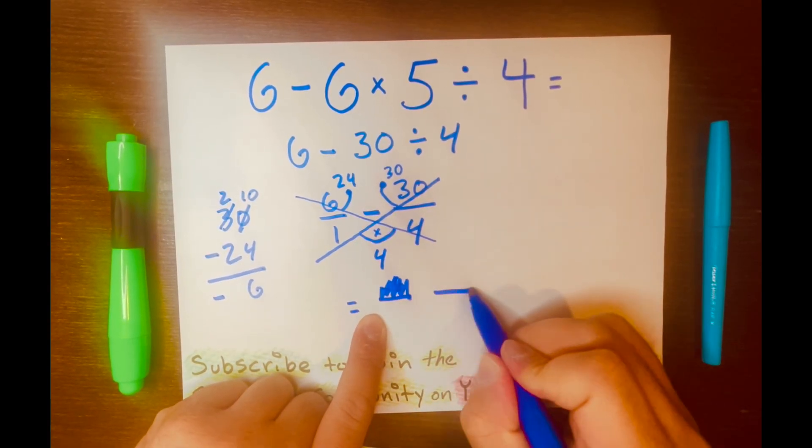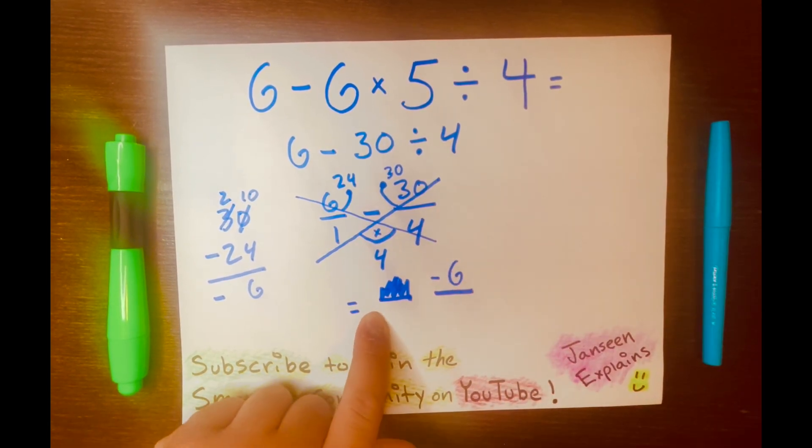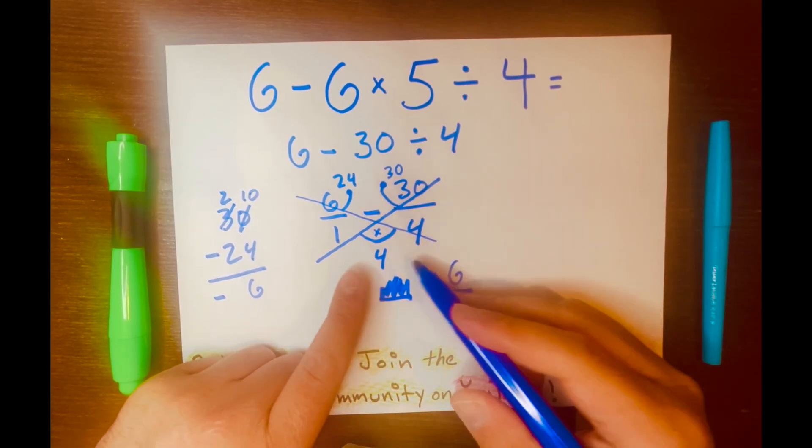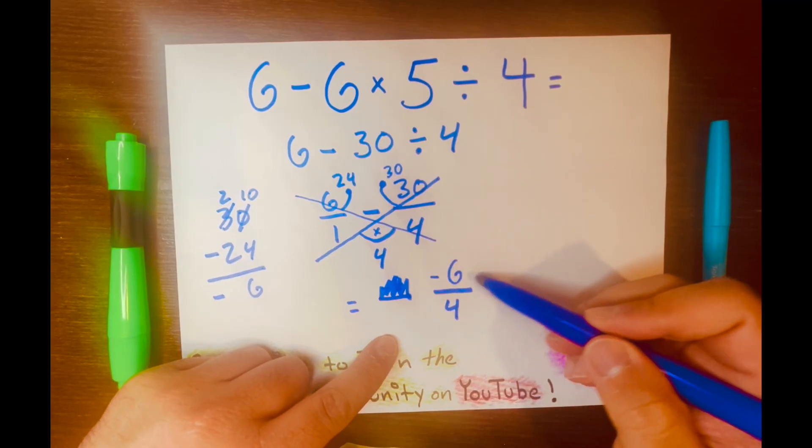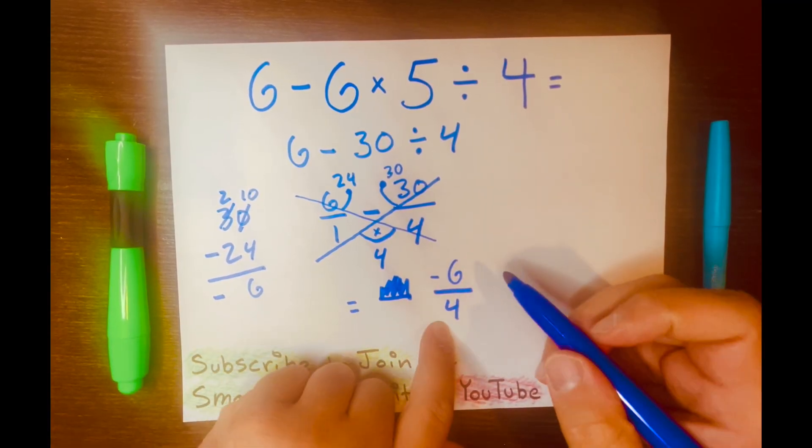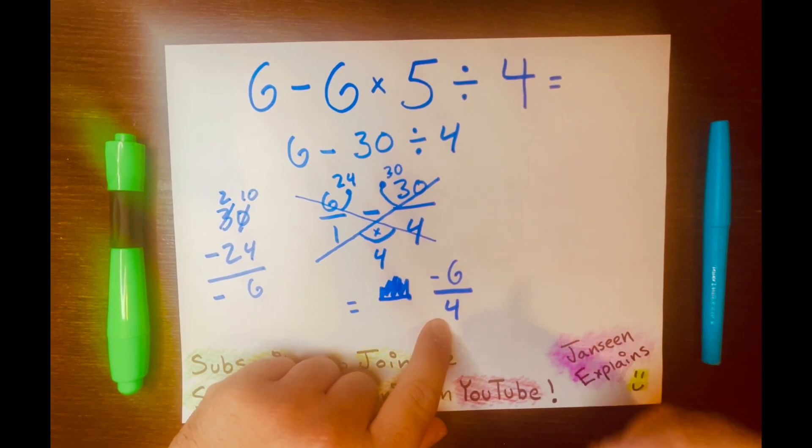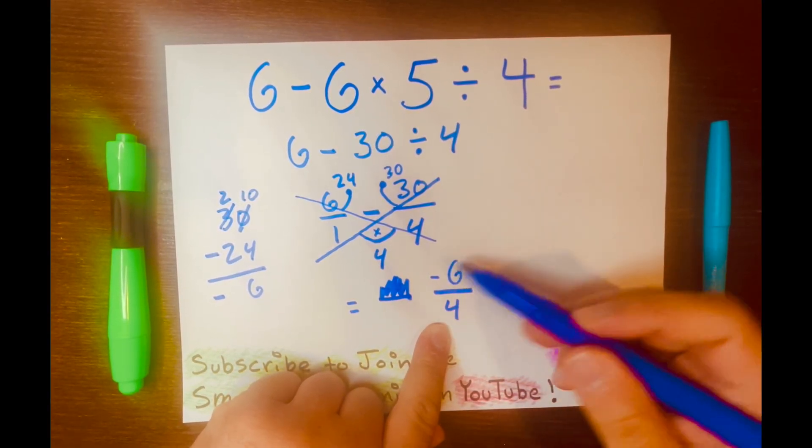Let me write this a little bit bigger, so that you can see. Negative 6, like that. And the 4 will go down here. That is the denominator. Now, we're looking at negative 6 over 4. And, by the way, we're going to get a mixed number answer and a decimal answer from this improper fraction.